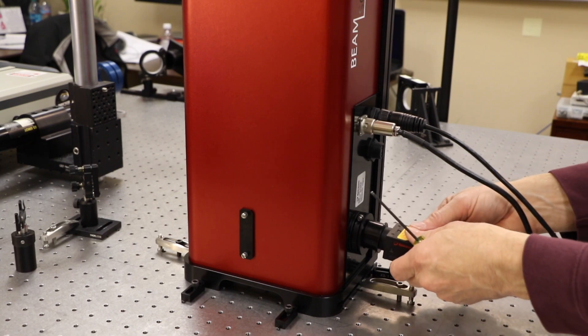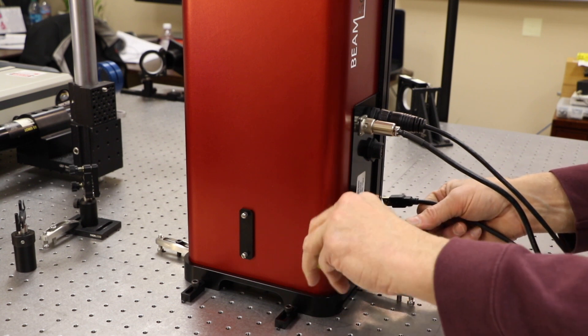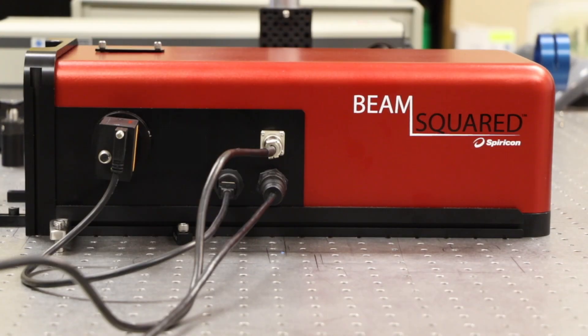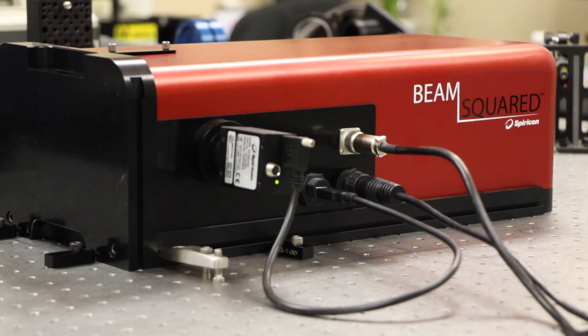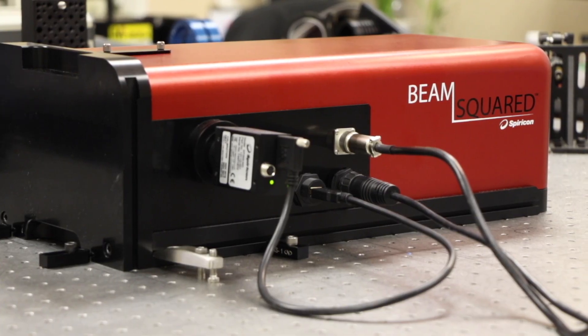Whether you choose to use the automated or manual mode to populate the step table, the Ophir Spiricon Beam Squared is the easiest and most accurate laser beam propagation measurement product on the market today.